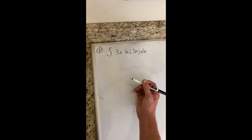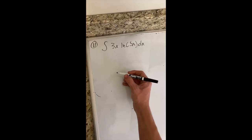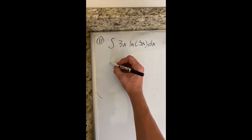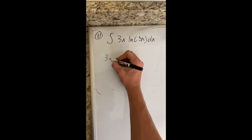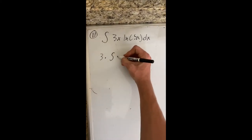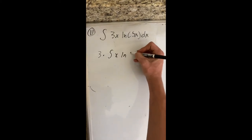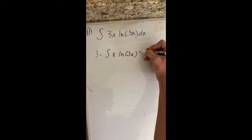So to integrate by parts, we're first going to want... First, I like to remove the constant. So this is going to get moved to 3 multiplied by the integral of x ln 5x dx.